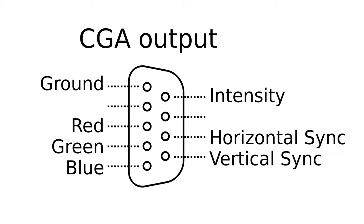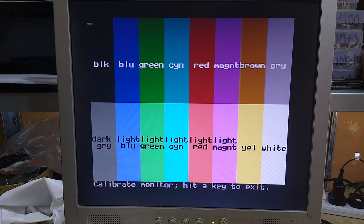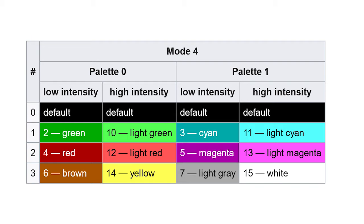So let's talk about CGA signals. They work very similar to monochrome video in that they're digital and have a separate intensity signal, but because we now have three colours — red, green, and blue — we have three video signals instead of one. There is only one intensity signal for the three colours, and when set it just brightens everything up. This results in a total of 16 different possible colours. Unfortunately only four of these colours can be on screen at once in graphics mode, and even worse you have to choose from four rather garish predefined palettes. CGA really was rather crap compared to the graphics capabilities of even cheap home computers of the time such as the ZX Spectrum.